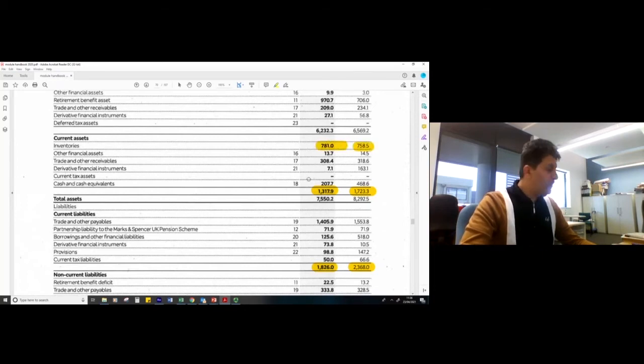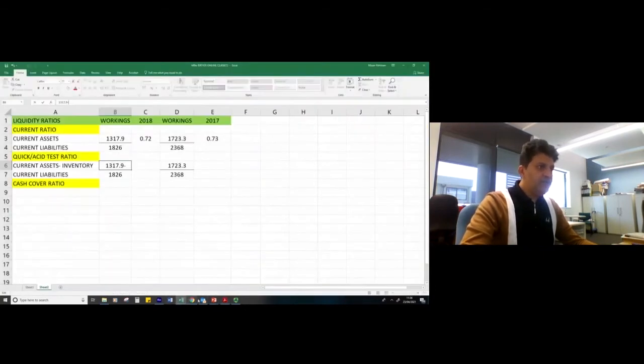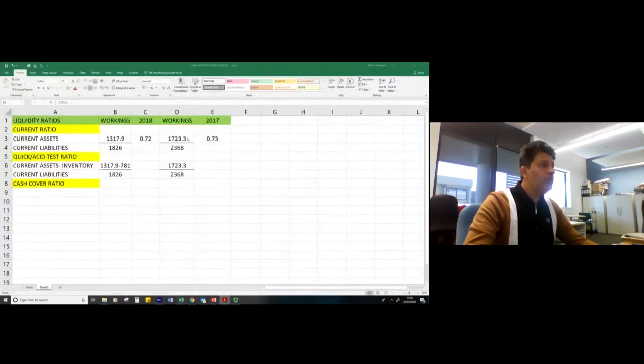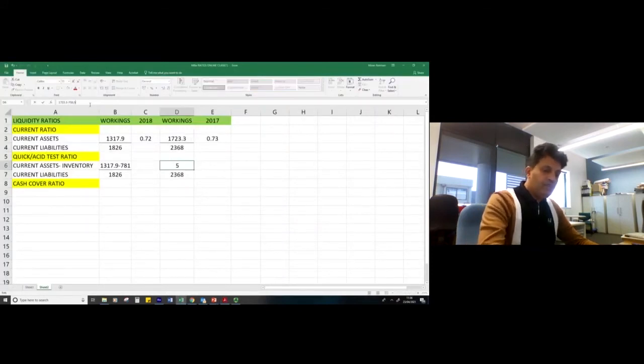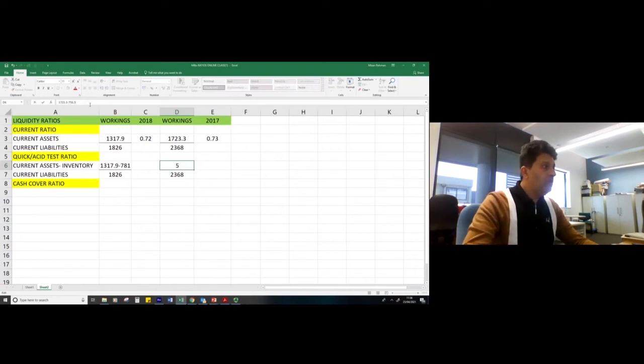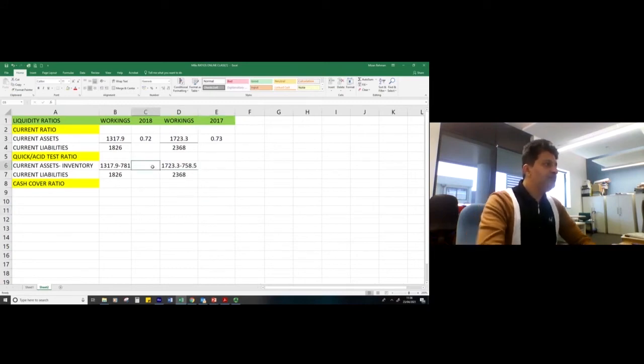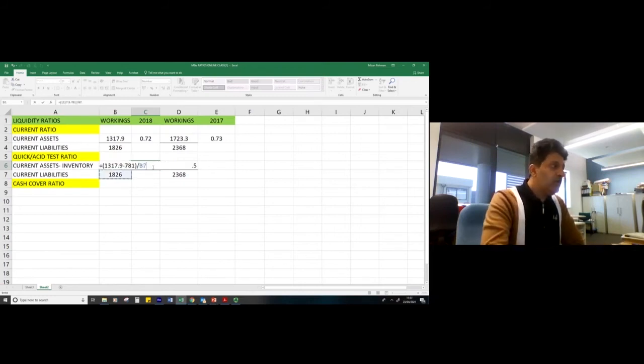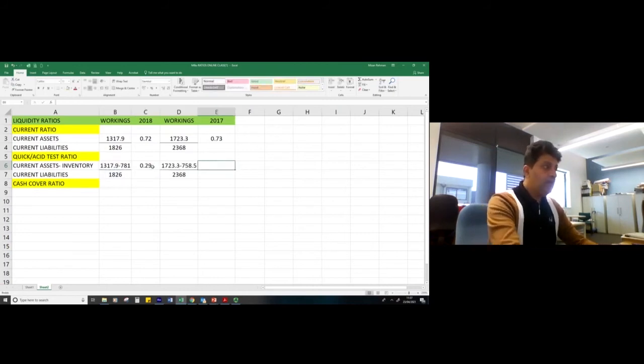In inventories, 781 and 758.5 for 2018 and 2017. Doing the math, 1891.7 minus 781 divided by 1719.7, and 1891 minus 758.5 divided by 1719.7.